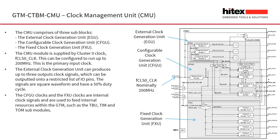The clock management unit comprises three sub-blocks: the external clock generation unit (EGU), the configurable clock generation unit (CFGU), and the fixed clock unit (FXU). The 200 MHz cluster zero clock is provided to the clock management unit as a source clock from which all other clocks are derived. The external clock generation unit can produce up to three outputs which can be output onto a restricted list of GPIO pins, with square wave signals at a 50% duty cycle.